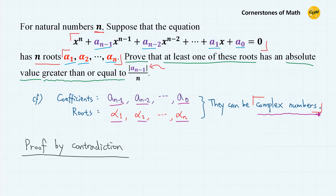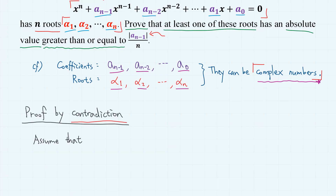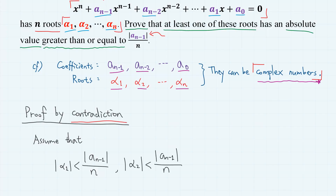So let's start the proof. We are going to use proof by contradiction. Let's deny the conclusion and assume that the absolute value of root alpha 1 is less than the absolute value of coefficient a_{n-1} divided by n, and similarly for alpha 2, and so on, up to alpha n. So this is the denial of the conclusion — that all roots have absolute values less than the absolute value of a_{n-1} over n.